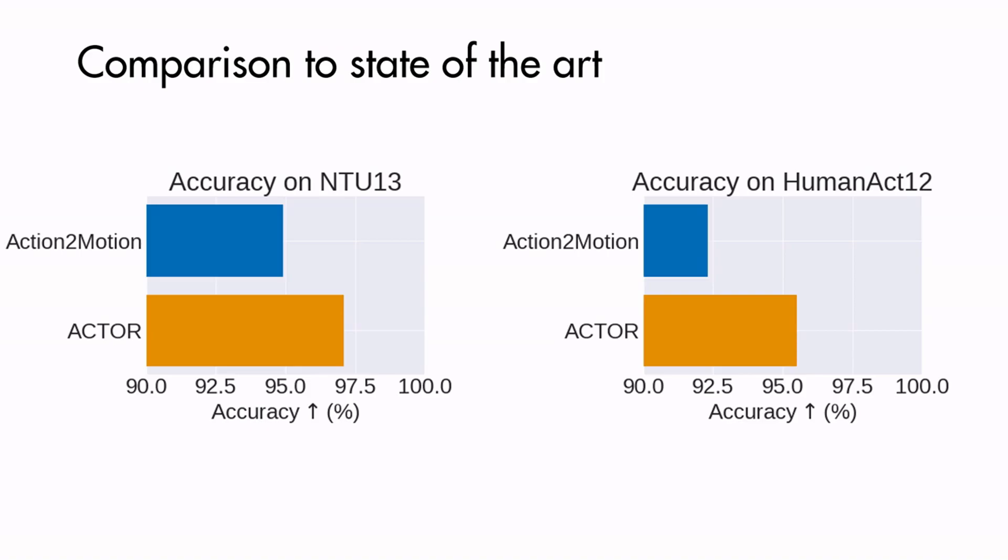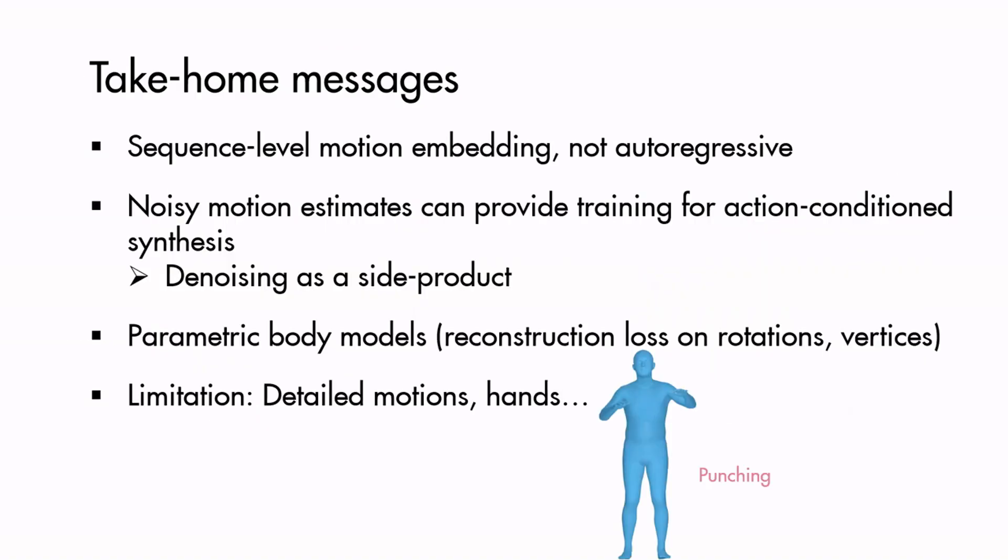To summarize, we use a sequence-level motion embedding with a non-autoregressive decoder. We train our action-conditioned generator with noisy motion data, but we are able to generate smooth motions. We use properties of the SMPL body model to define a loss on rotations and vertices. Our method still has limitations, for example, the motions lack fine details such as hand articulations.